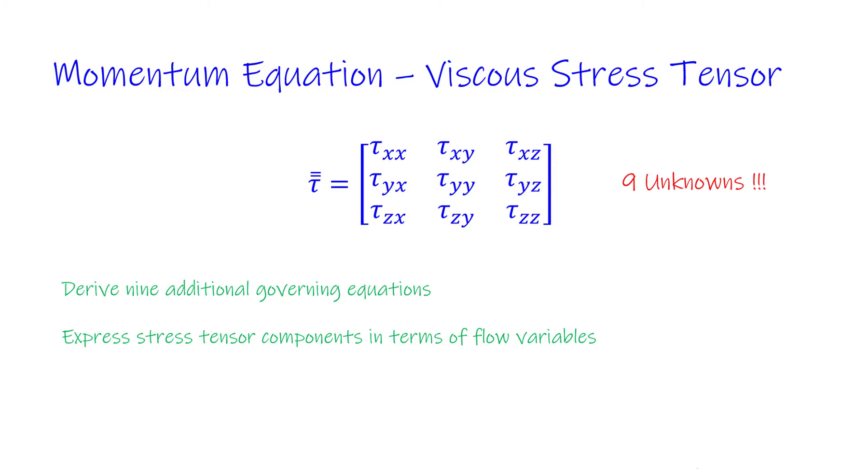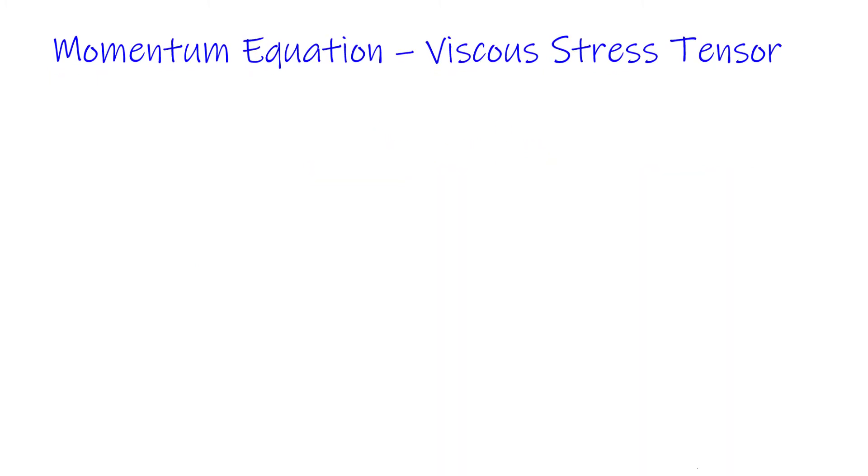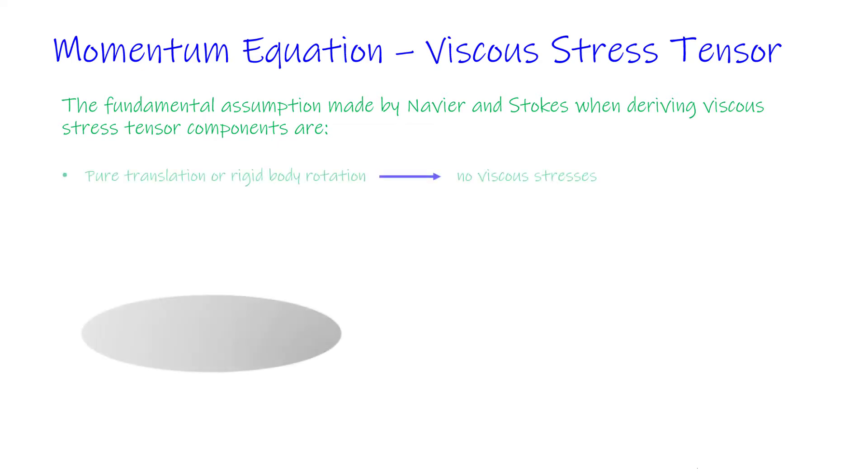Let's analyze the assumptions that Navier and Stokes used for the viscous stress tensor. The first one is to assume that no viscous stresses are generated by pure translation and rigid body rotation.